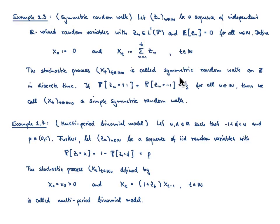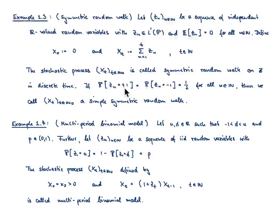The term 'symmetric' refers to the fact that the random variables Z_n have expectation 0. In the special case where the probability that Z_n equals +1 equals the probability that Z_n equals −1, both equal to 1/2, the corresponding process is called the simple symmetric random walk. You start at 0, toss a coin — heads means one step up, tails means one step down — and repeat. From any position, the next step is again either up or down.